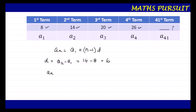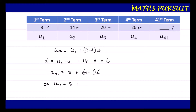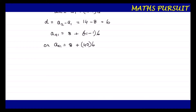Putting d into the formula: a_41 = a_1 + (n − 1) × d = 8 + (41 − 1) × 6 = 8 + 40 × 6 = 8 + 240 = 248. So we got the value a_41 = 248.